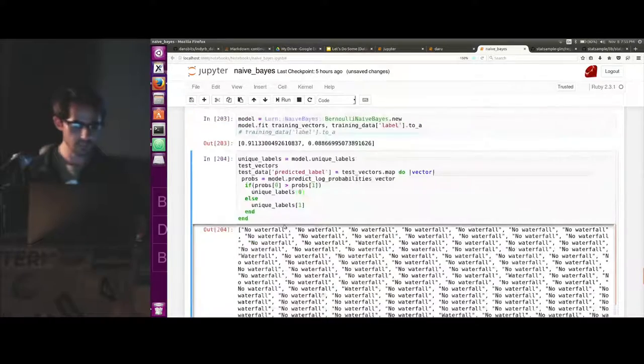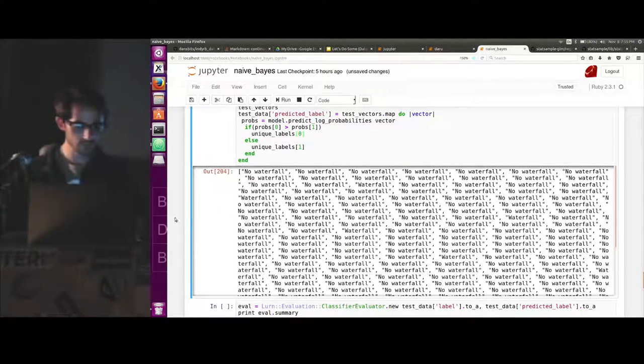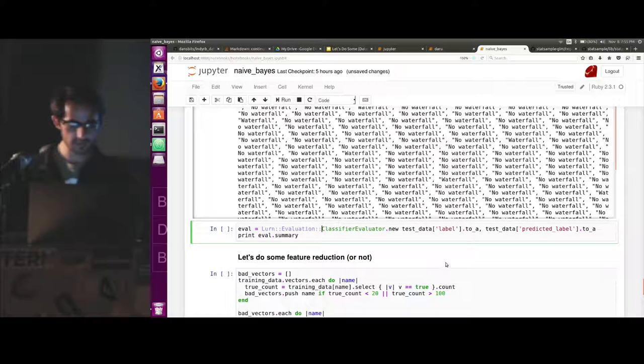But it gives back this array of waterfall and no waterfall. So we have a classifier evaluator as well. So we can pass it what the actual label was. So whether it actually contained a waterfall. And we pass it what we predicted. And it's going to give us an evaluation of how well our classifier did.